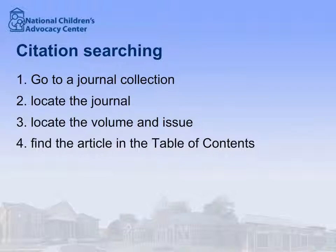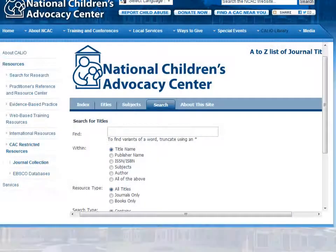Let's take our example of a citation. With access to a university or the Caleo journal collection, you can locate your article within a few clicks. In Caleo, locate the A-Z journal collection. This restricted access section is available to NCA accredited and associate member CAC's staff and MDTs.